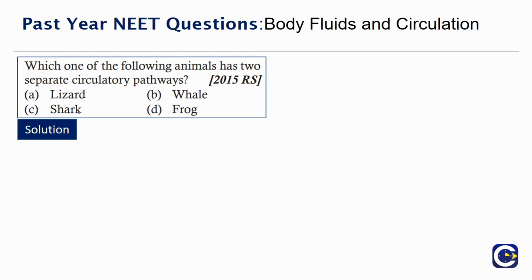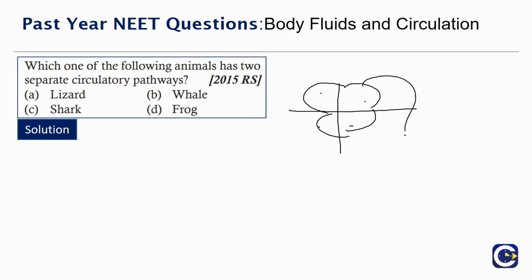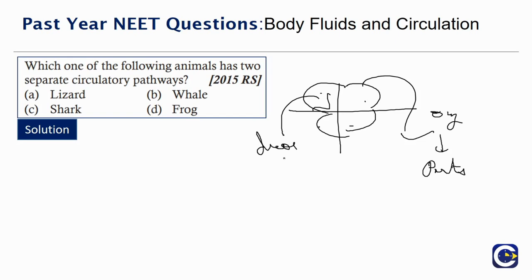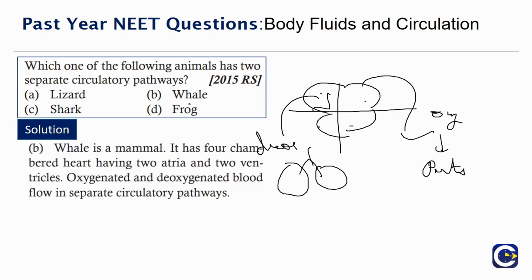This is a correlation between the animal kingdom chapter and circulation. If we have four chambers as in mammals only, one ventricle will lead oxygenated blood to parts of the body, and the other will carry deoxygenated blood and oxygenate it. This creates the two separate pathways, present only in mammals. Lizard is not a mammal; shark and frog are also not mammals. The only mammal here is Whale, so the solution is Whale.